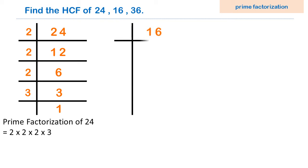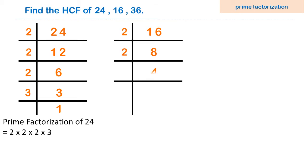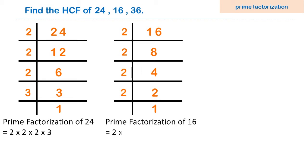Let's find the prime factors of 16. 16 is an even number so we start our prime factorization by the smallest prime number 2. Divide 16 by 2 to get 8; divide 8 by 2 to get 4; divide 4 by 2 to get 2; divide 2 by 2 to get 1. If we get 1, we stop. So the prime factorization of 16 is 2 × 2 × 2 × 2.